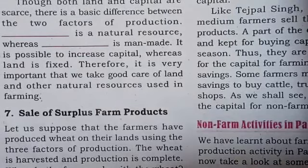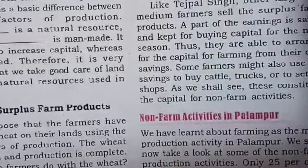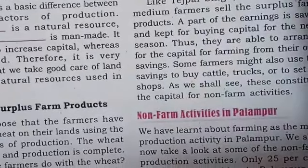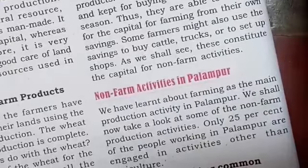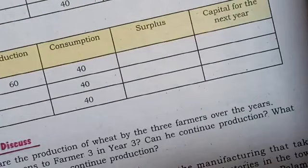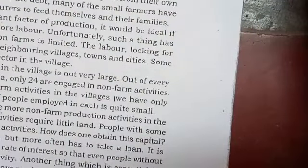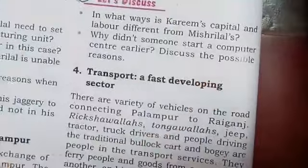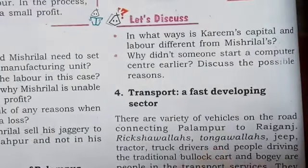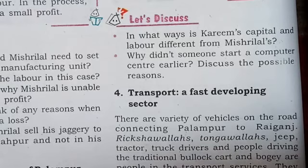There are lots of non-farming activities happening in Palampur. The first is dairy activity — they do animal husbandry, get milk, and by selling it they can earn a lot of money. They also have lots of shops, through which they earn money. They are also engaged in transport, having big vehicles, small vehicles, and all kinds of vehicles, with good roads.